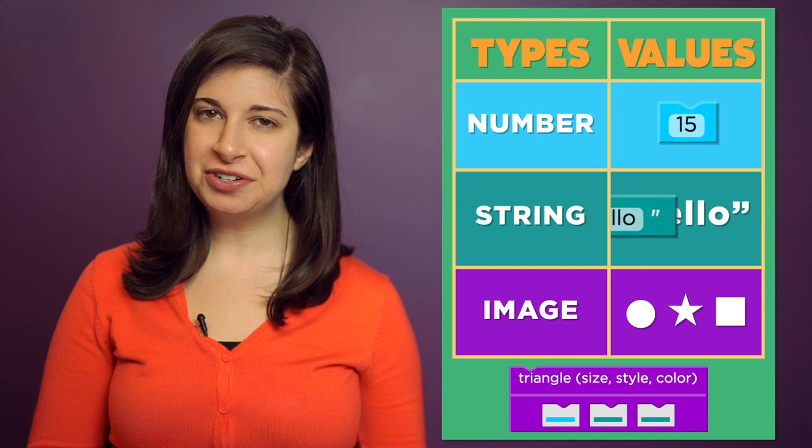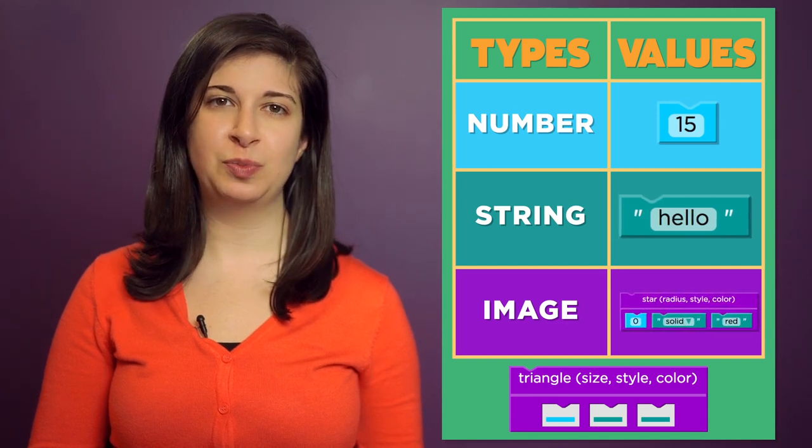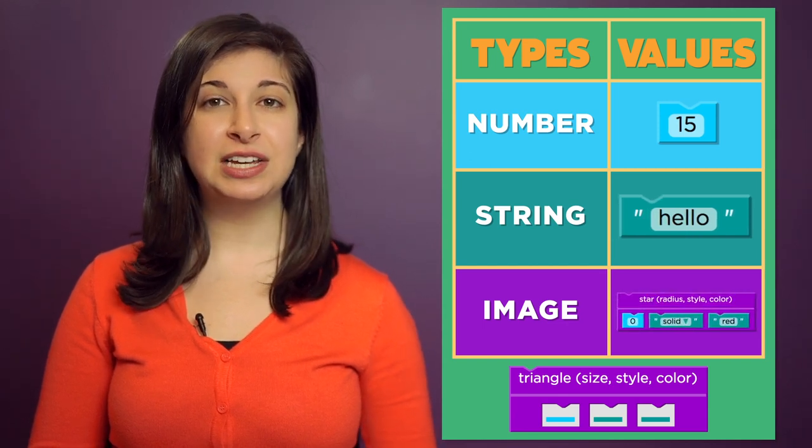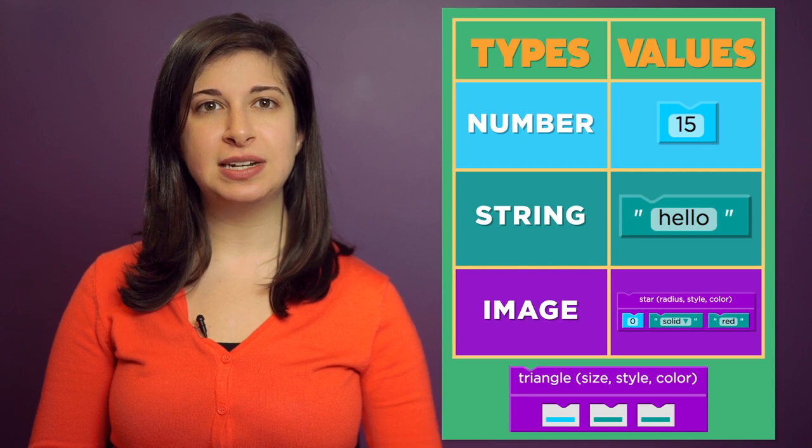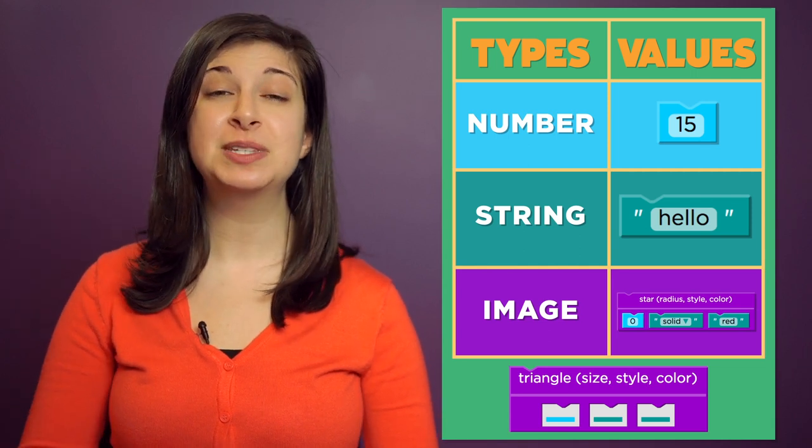Numbers are blue, strings are teal, and images are purple. In this next stage, you'll start by using these new data types in your program to create shapes and images.